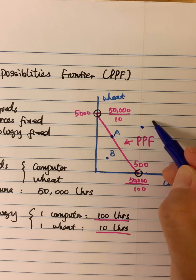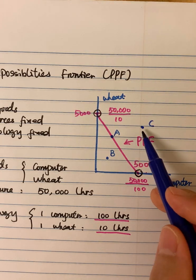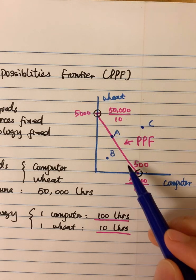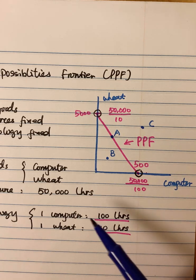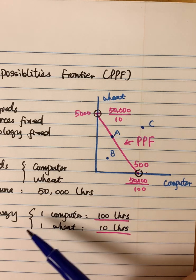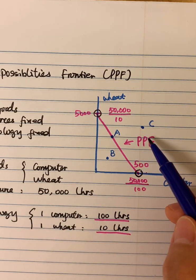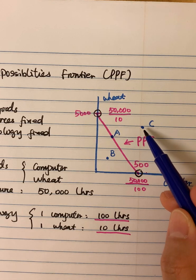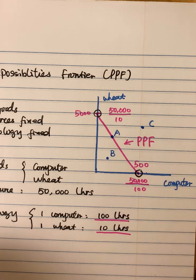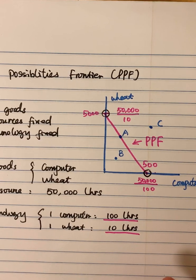And we might have another point here, point C. So point C here is already outside this PPF, which means based on the given resources and technology, it is impossible for the economy to produce at point C. So those are the things about PPF. I hope you can have better understanding about PPF after my explanations.